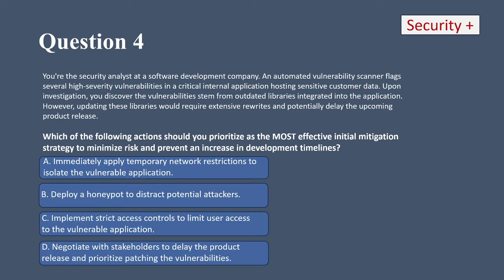Question four — a long one. You're the security analyst at a software development company. An automated vulnerability scanner flags several high-severity vulnerabilities in a critical internal application hosting sensitive customer data. You discover the vulnerabilities stem from outdated libraries integrated into the application. However, updating these libraries would require extensive rewrites and potentially delay the upcoming product release. Which of the following actions should you prioritize as the most effective initial mitigation strategy to minimize risk and prevent an increase in development timelines? A, immediately apply temporary network restrictions to isolate the vulnerable application; B, deploy a honeypot to distract potential attackers; C, implement strict access controls to limit user access to the vulnerable application; or D, negotiate with stakeholders to delay the product release and prioritize patching the vulnerabilities.